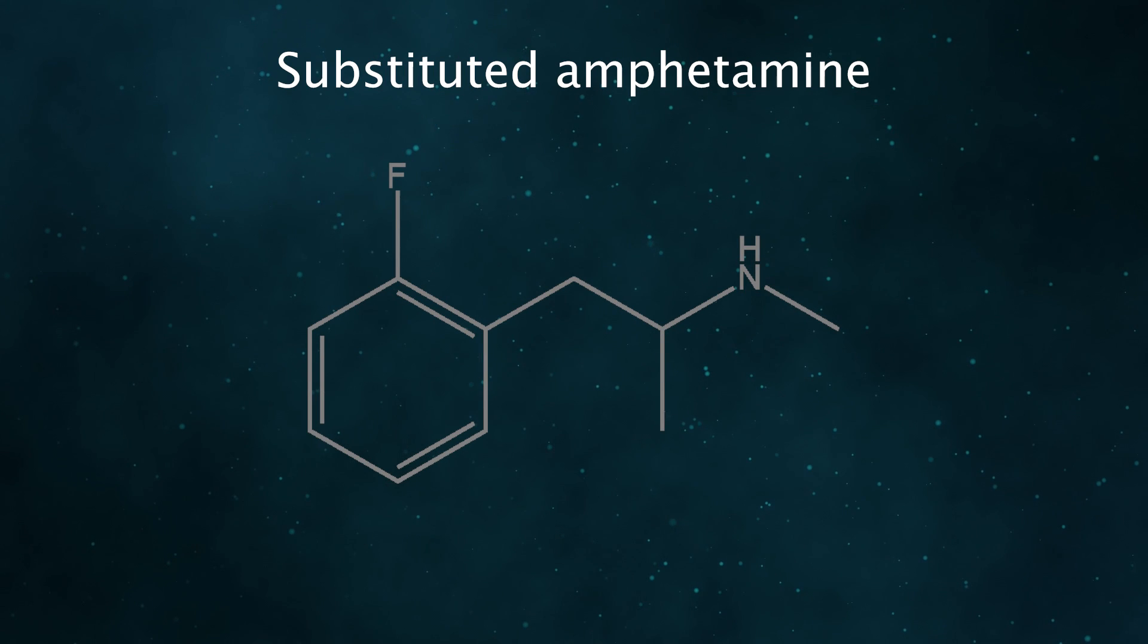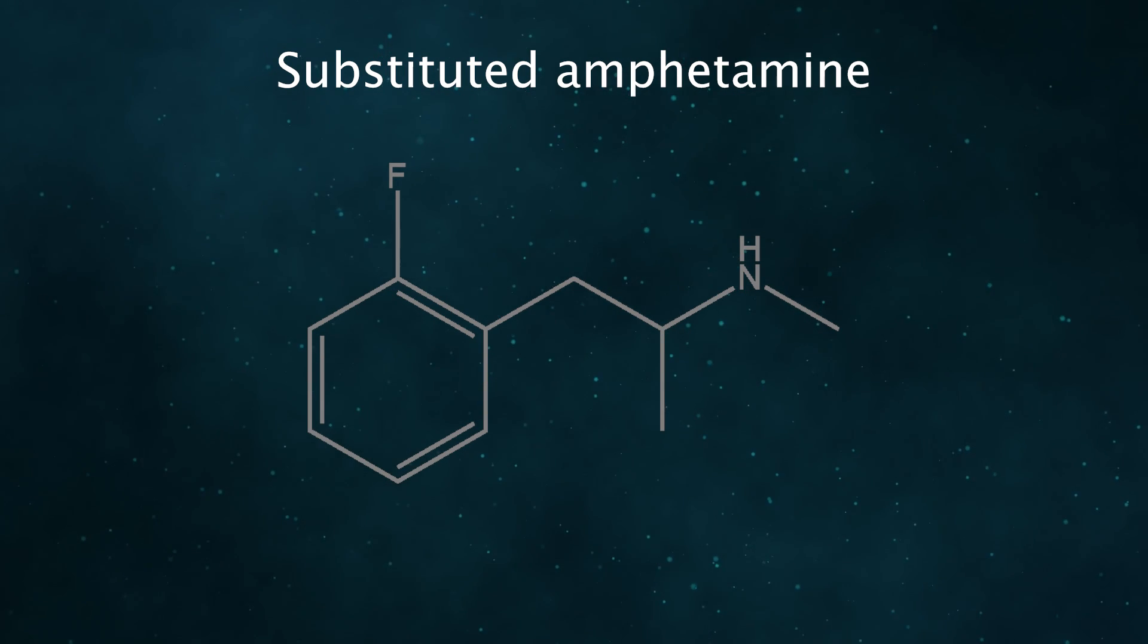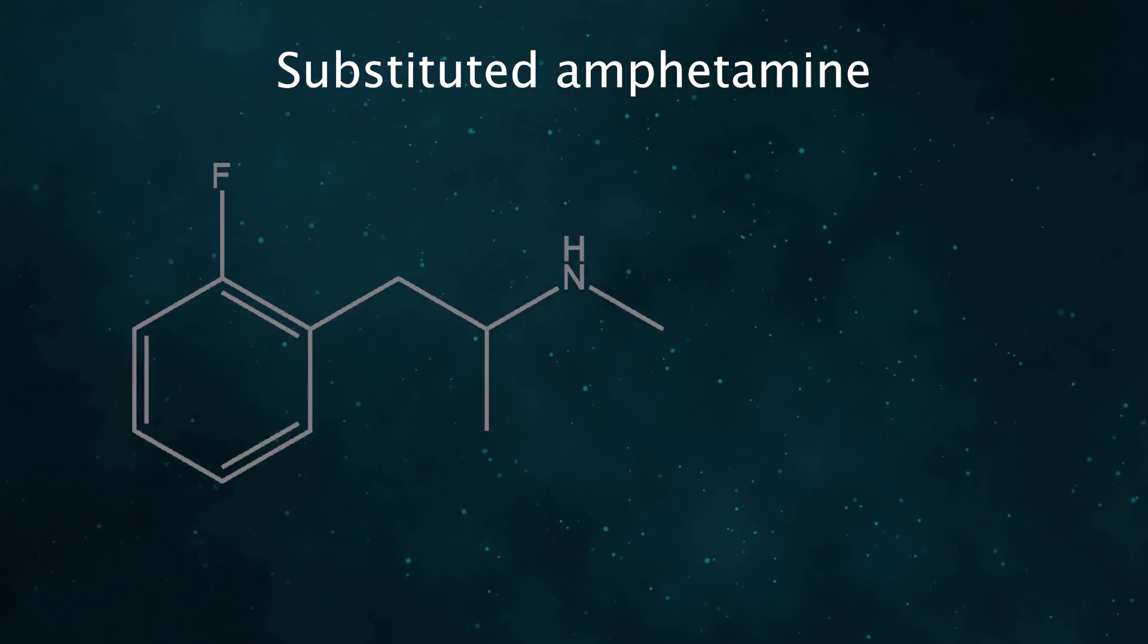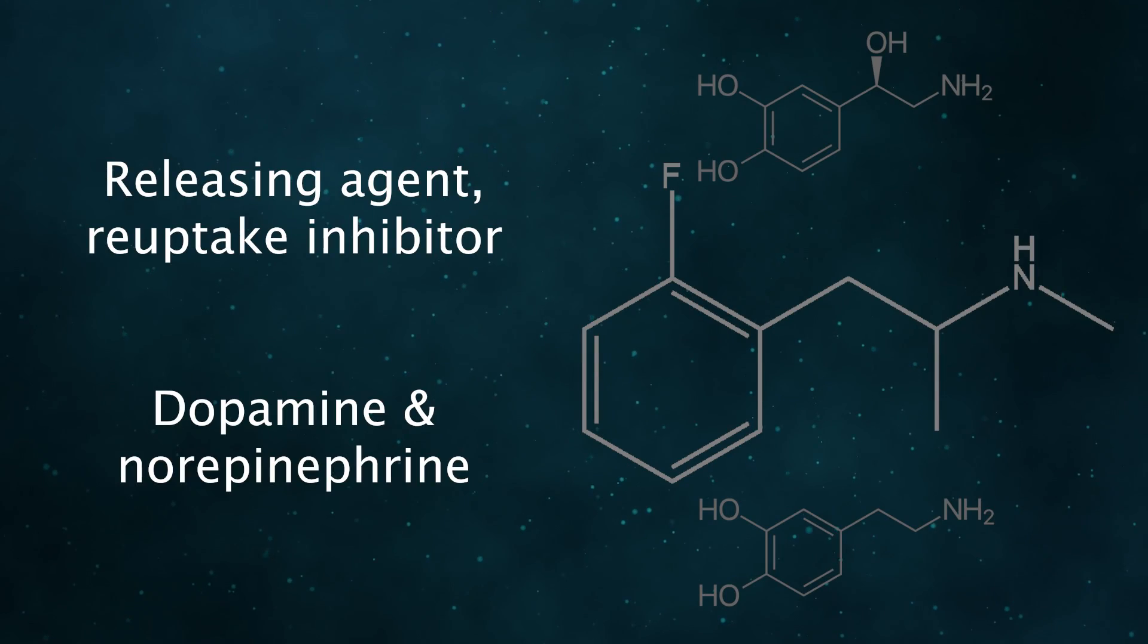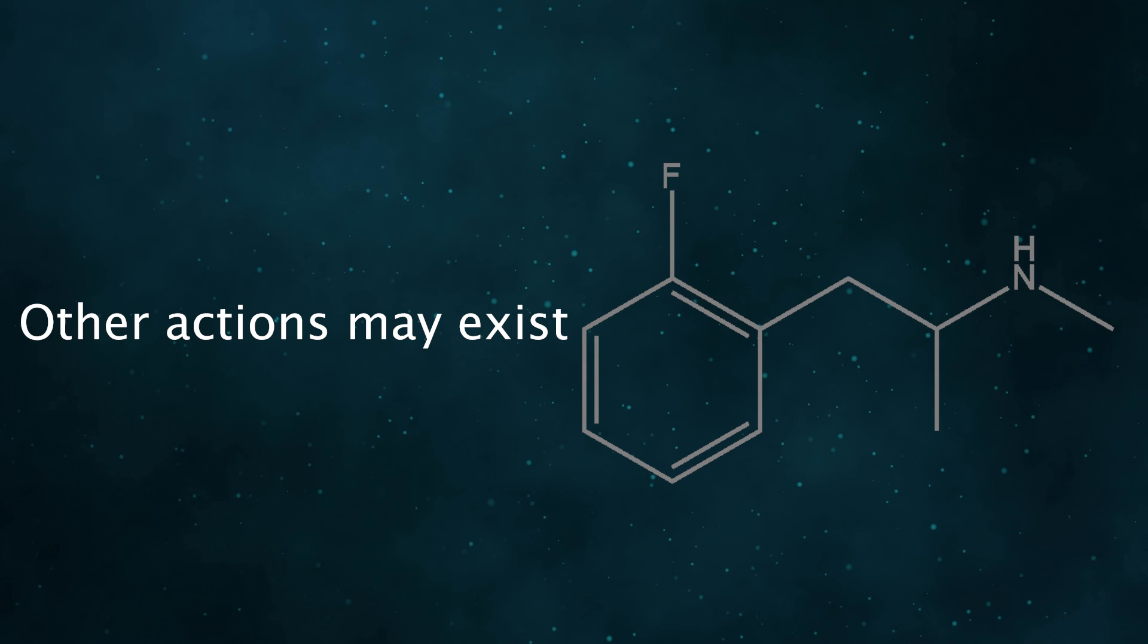2-FMA is a substituted amphetamine. It's a member of a group of fluorinated amphetamines, such as 2-FA and 4-FA. We don't know how the drug is functioning. Currently, it's believed to function as a releasing agent and reuptake inhibitor for dopamine and norepinephrine. There could potentially be other actions, but they've yet to be investigated.